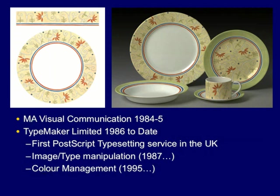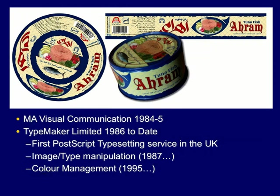Coming back to type, variations of the application were also developed for the manipulation of text for various industrial processes. Here, a metal tin can is actually pre-printed before it's punched out to form the sides of the tin. All the artwork and text needs to be distorted to accommodate not just the compression to form the walls, but also the metal stretches more the further out it goes, and so compensation for that is also applied.